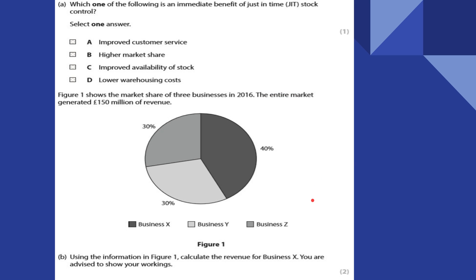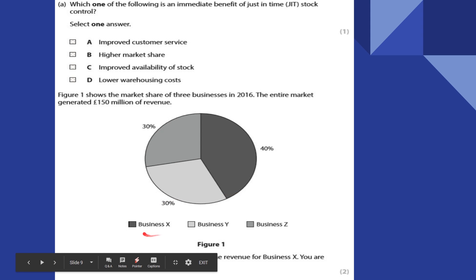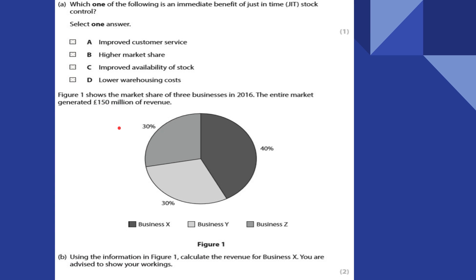Using the information in figure one, calculate the revenue for business X. Here's business X — we're trying to work out the actual revenue, and we can see it's 40% of £150 million. So we simply go 150 times 0.4, and that tells us the actual revenue they earn. It's 0.4 because it's 40% of that total. Really straightforward two marks there.